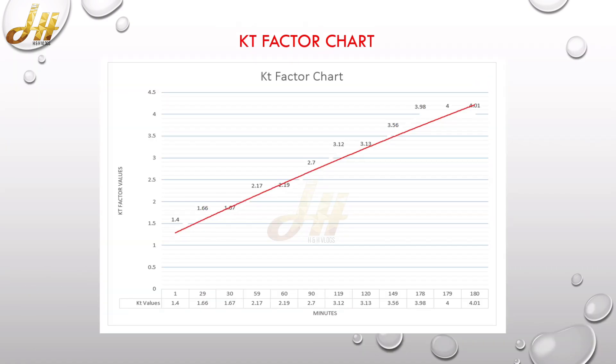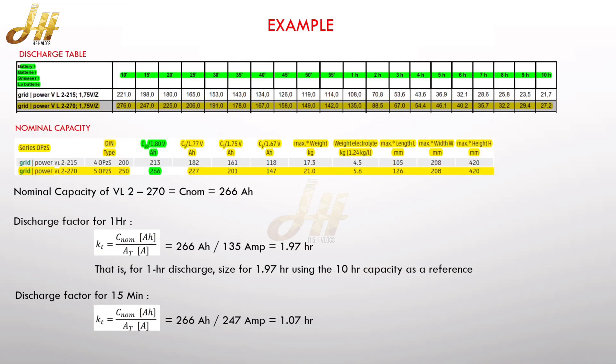So now you can see the KT factor chart. So the x-axis is mentioned as the time, and y-axis is mentioned as the KT factor values. Because some of the consultants or end users will ask for the KT factor chart, so this is how a KT factor chart will look like. It will be like a line.